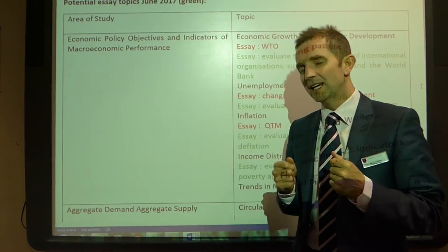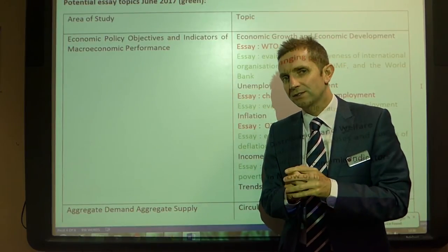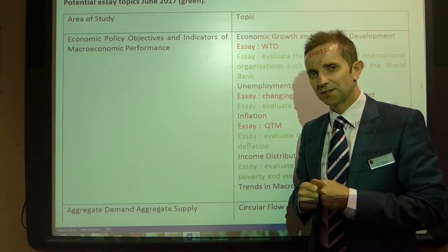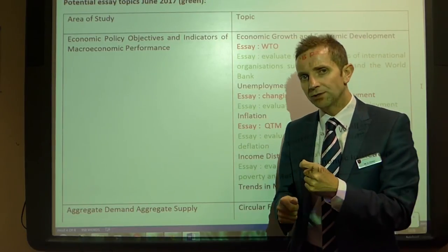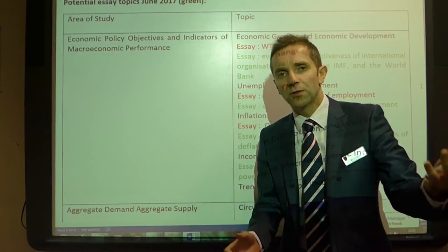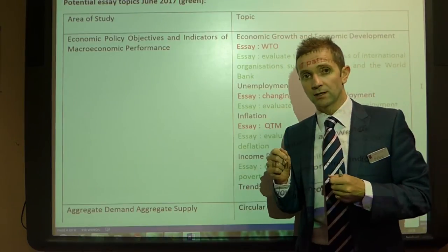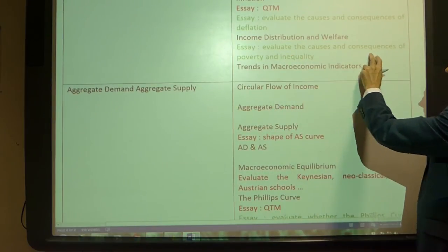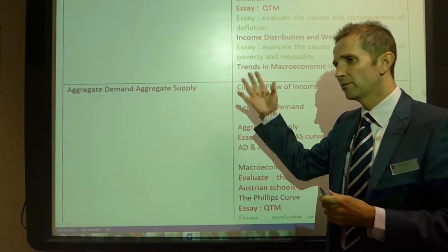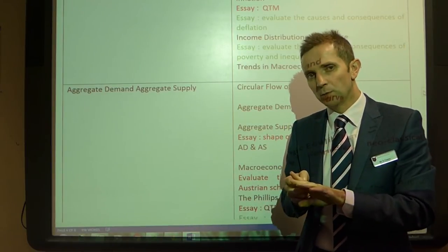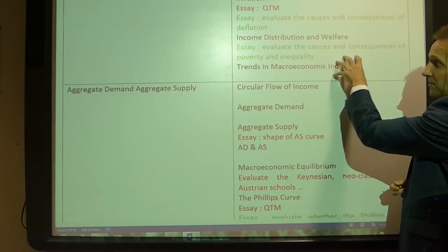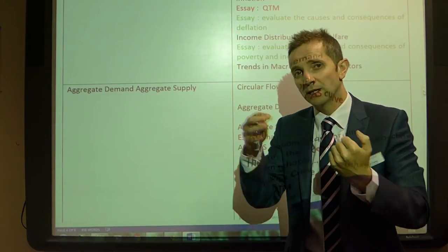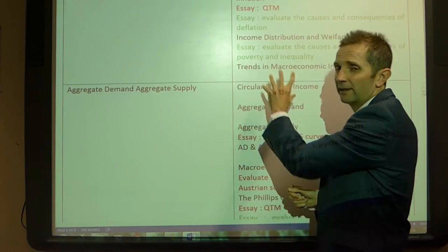Evaluate the causes and consequences of deflation. I threw this in because inflation is assessed all the time, but deflation is not. However, it's lifted directly from your specification, so it's certainly an area to look at — how is deflation caused, what are the key consequences, who are the winners and losers? Because not everybody is a winner in terms of deflation. What about the causes and consequences of poverty and inequality? We've had one on global income distribution in developed nations, but what about causes and consequences of poverty, looking at solutions like minimum wage, living wage, and reforms to the tax system?